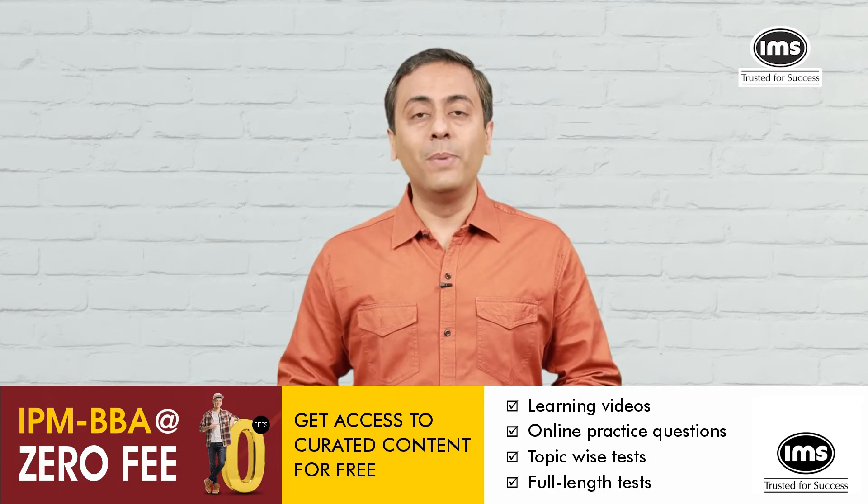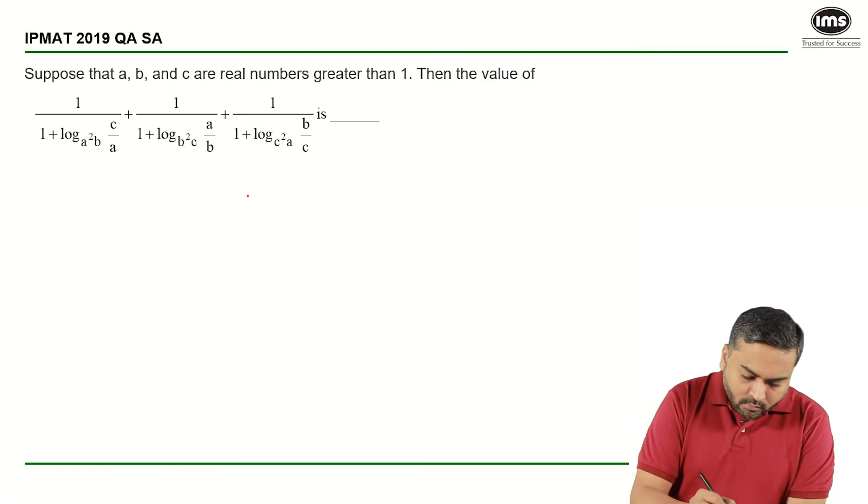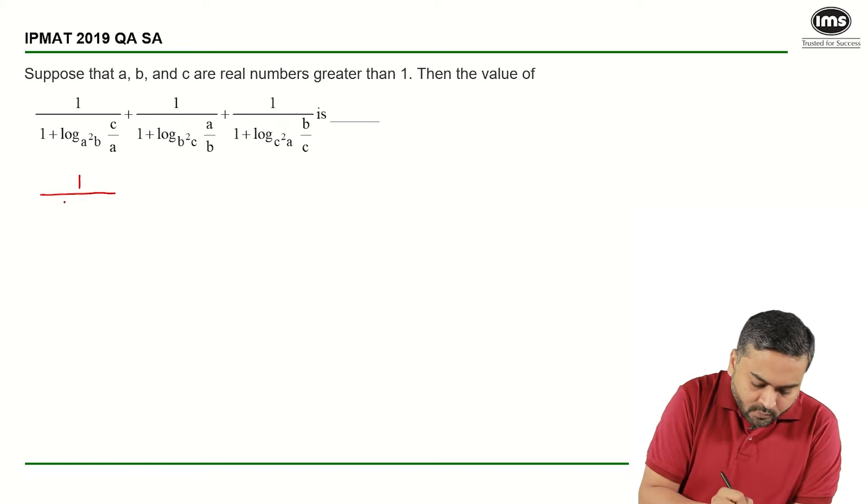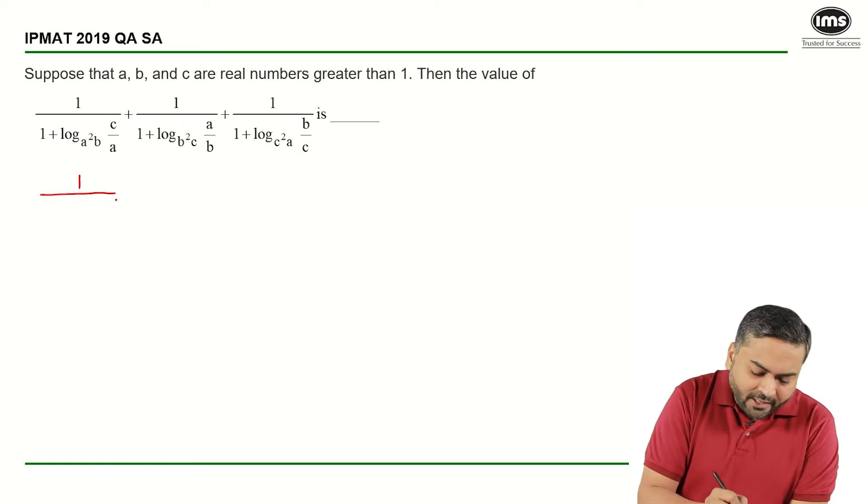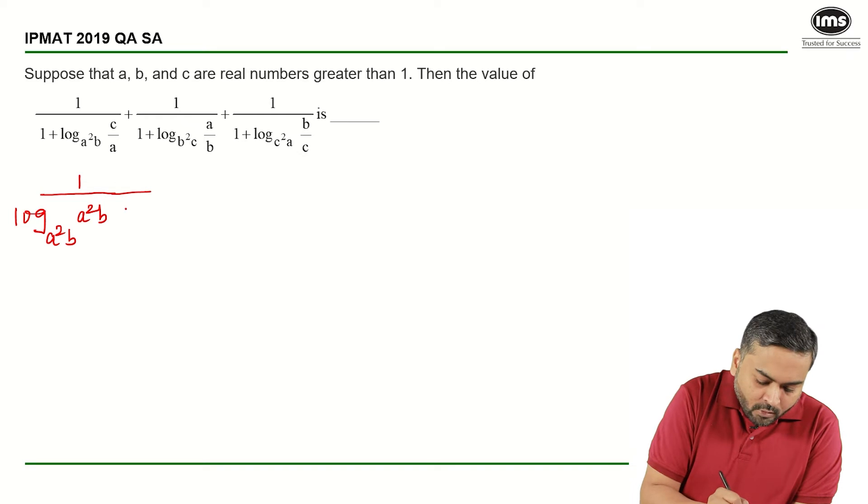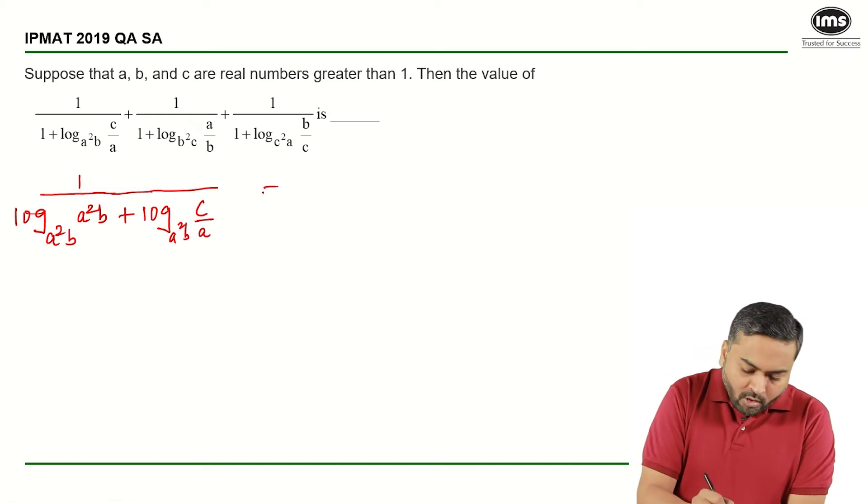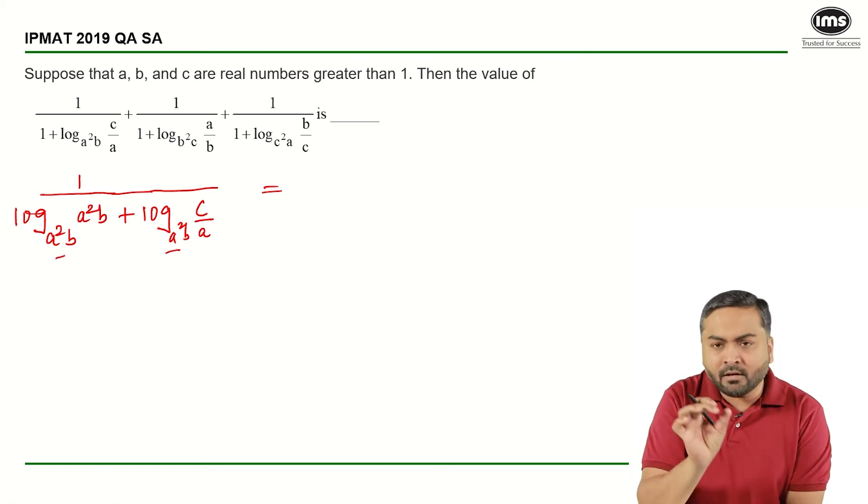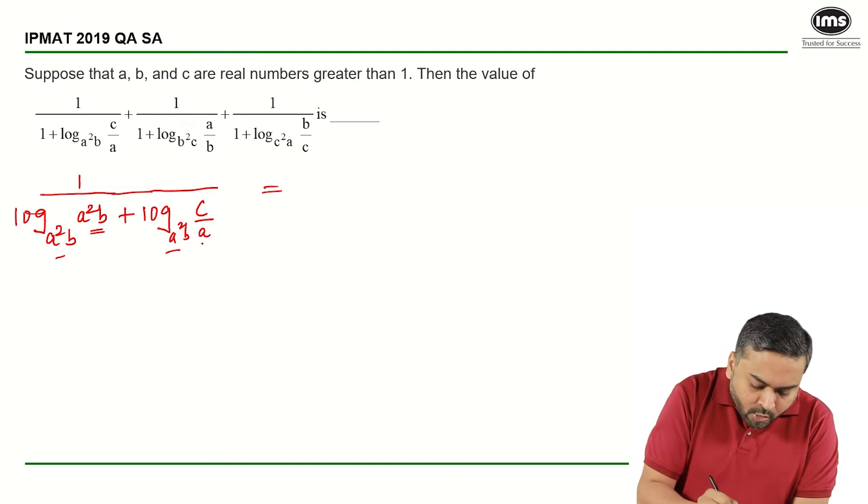So let's take the first term. I have 1 upon, so I can write down this as log of a square b to the base a square b plus log of c by a to the base a square b is what I have. So both the bases are same here, so the term, the log of a square b and c by a, these two terms should get multiplied.